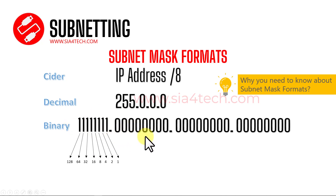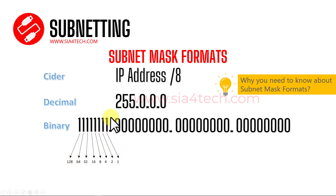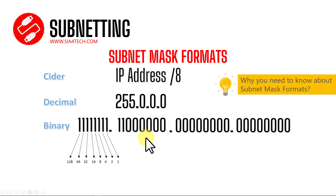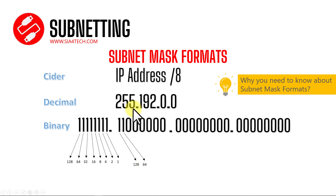Each IP address or subnet mask consists of four octets, and each octet consists of eight bits. These bits represent numbers starting from the left: 128, 64, 32, and so on — the sum of all bits gives 255, meaning all bits in the octet are on. For example, if the first two bits in the second octet are on — 128 and 64 — their sum is 192, making the subnet mask 255.192.0.0 with a CIDR of 10, because 10 bits are on.